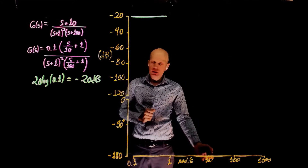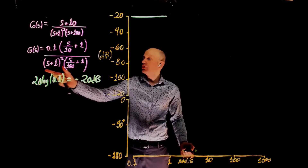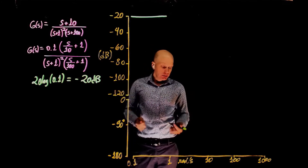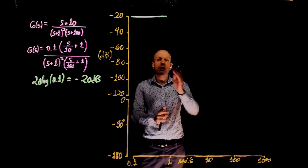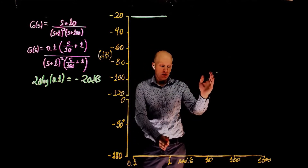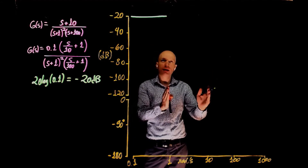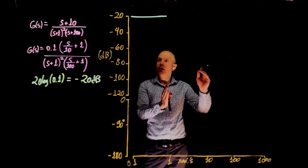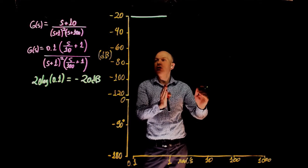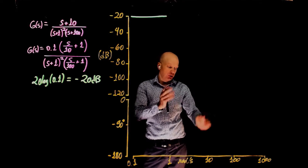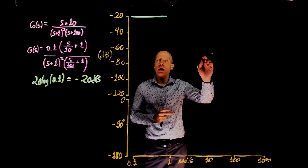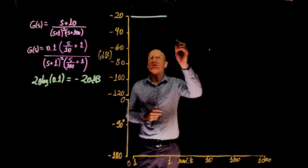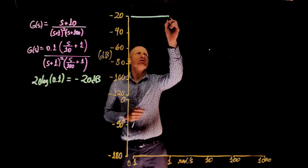From 1 to 10 rad/s, we have these two poles and the slope is negative 40 dB per decade. This means if you move the frequency by a factor of 10, the Bode plot goes down by 40 dB, so we should be at around negative 60 dB.